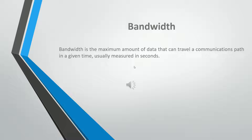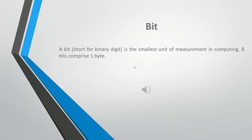Bandwidth is the maximum amount of data that can travel a communications path in a given time, usually measured in seconds. A bit, short for binary digit, is the smallest unit of measurement in computing. 8 bits comprise 1 byte.